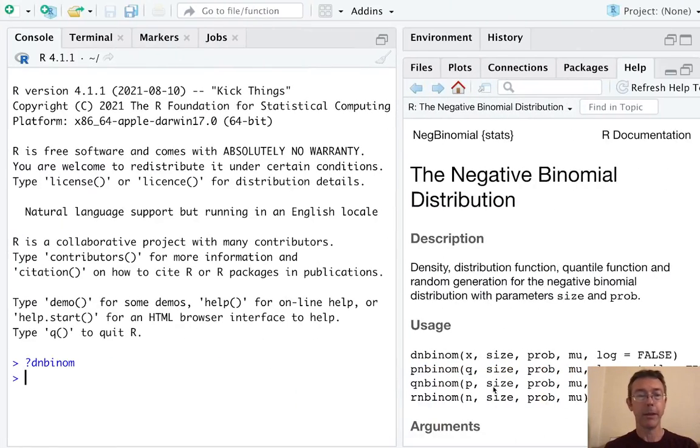I've already pulled up the help file for the negative binomial distribution here with question mark dnbinom. You can also see the syntax and usage for those other negative binomial functions that I mentioned, pnbinom, qnbinom, and rnbinom. Okay, so here we need to know a specific probability. So it's going to be a dnbinom. And in particular, we want to know the probability of 25 failures before the sixth success, when the probability of success in each trial is 0.2. And in this case, it's just over 3%.